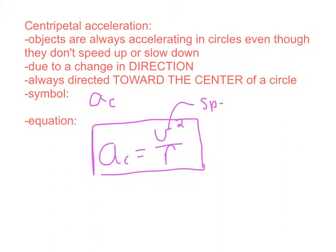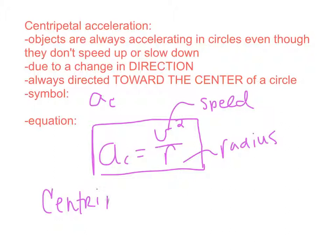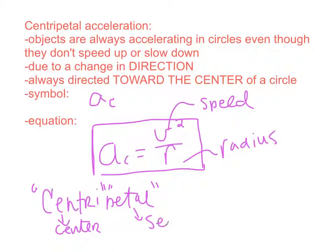To summarize the variables: v is speed, r is radius, and Ac is centripetal acceleration. One way to remember that centripetal acceleration is always directed towards the center is the definition of the word 'centripetal.' Breaking it apart: 'centri' refers to center, and 'petal' refers to seeking or loving. So the word centripetal literally means center-seeking or center-loving — meaning centripetal acceleration must be directed towards the center.